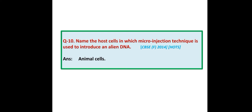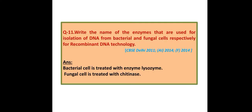Name the host cells in which the microinjection technique is used to introduce an alien DNA. Answer: Animal cells. Write the names of the enzymes used for isolation of DNA from bacterial and fungal cells respectively for recombinant DNA technology. Answer: Bacterial cells are treated with lysozyme; fungal cells are treated with chitinase.